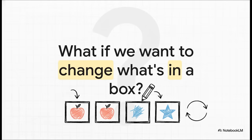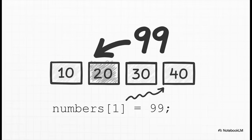So we can read from a box. What if we want to change what's in the box? Maybe a player's score needs updating, or we need to change a setting. You're going to love this — it's just as simple as reading. You point to the box you want to change; here it's index one, and you just use the equal sign to assign a brand new value. So we're saying: hey computer, go to the numbers array, find box number one, and stick the number 99 in there.